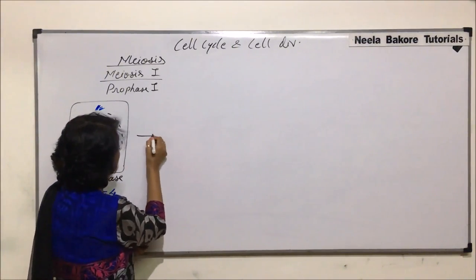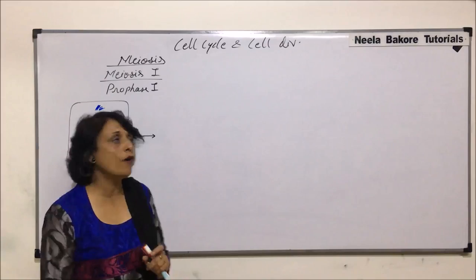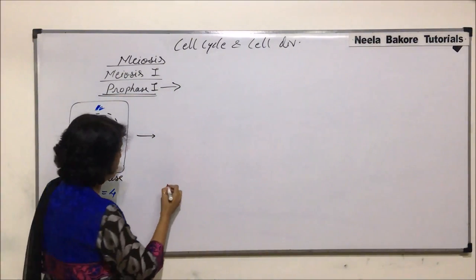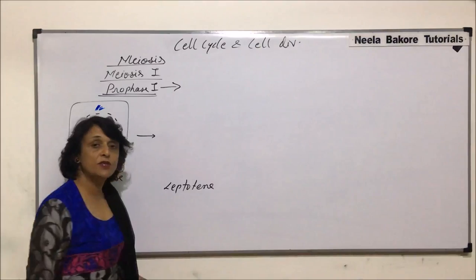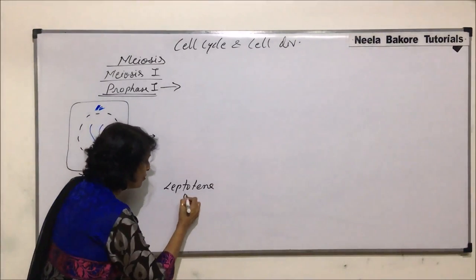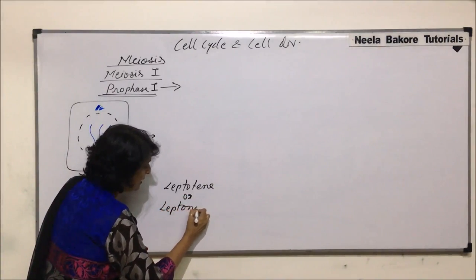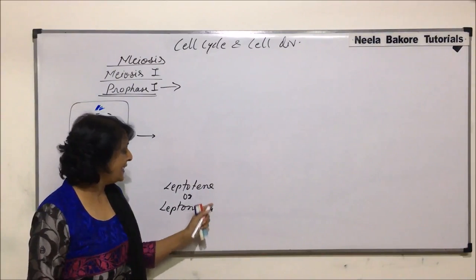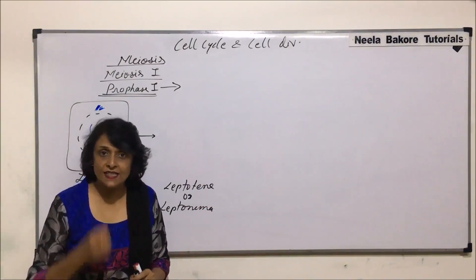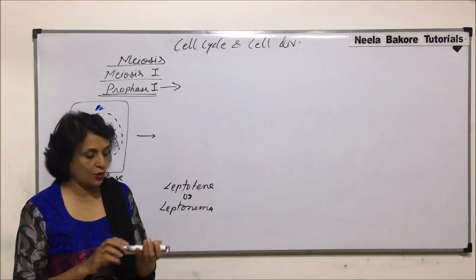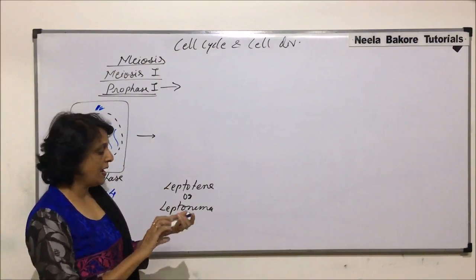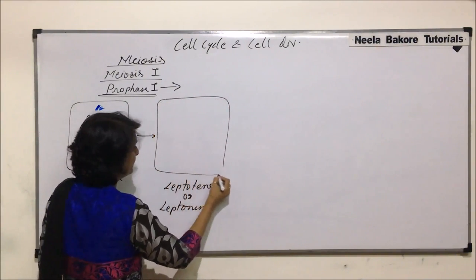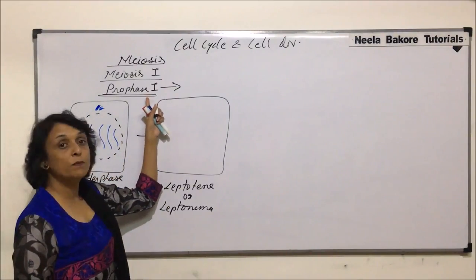After interphase, the cell enters the first sub-phase of prophase one — leptotene, also known as leptonema. The word 'leptos' means thin, and 'nema' means threads, so here we are going to see thin threads of chromatin fibers. The cell has gone into this first stage, so let us see what changes are observed.